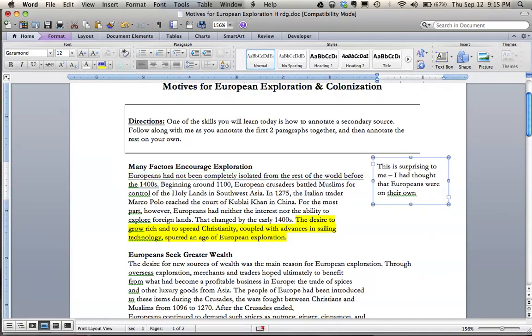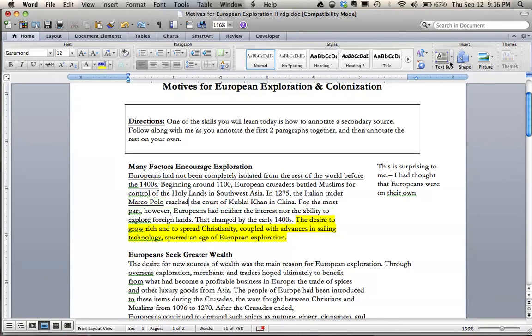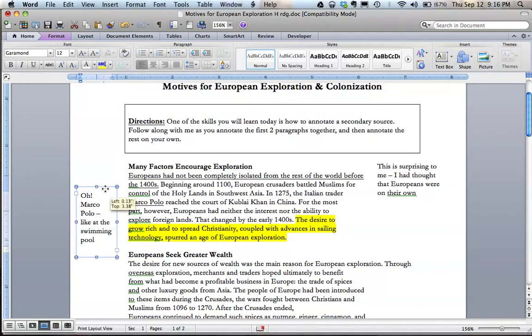Okay, going along now, looking back, are there any words I didn't understand? Beginning around 1100, European crusaders battled the Muslims for control of the Holy Lands in Southwest Asia. 1275, the Italian trader Marco Polo reached the court of Kublai Khan. Well, I'm actually going to underline Marco Polo because I didn't realize before that he was an Italian trader. I had always known him from that pool game that you have, Marco Polo. So I'm going to write that little comment in the margin. Okay, let me expand it here so you can see it. Okay. There we have my other comment, my connection, if you will.